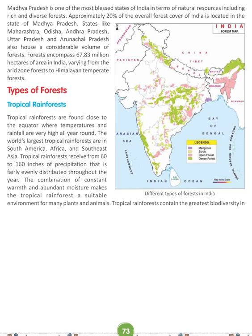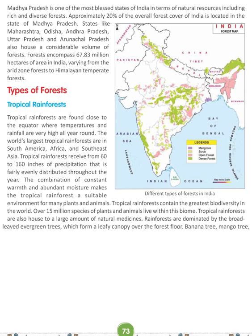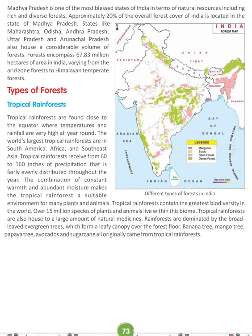Tropical rainforests contain the greatest biodiversity in the world. Over 15 million species of plants and animals live within this biome. Tropical rainforests are also home to a large amount of natural medicine. Rainforests are dominated by broadleafed evergreen trees which form a leafy canopy over the forest floor. Banana tree, mango tree, papaya tree, avocados, and sugarcane all originally came from tropical rainforests.